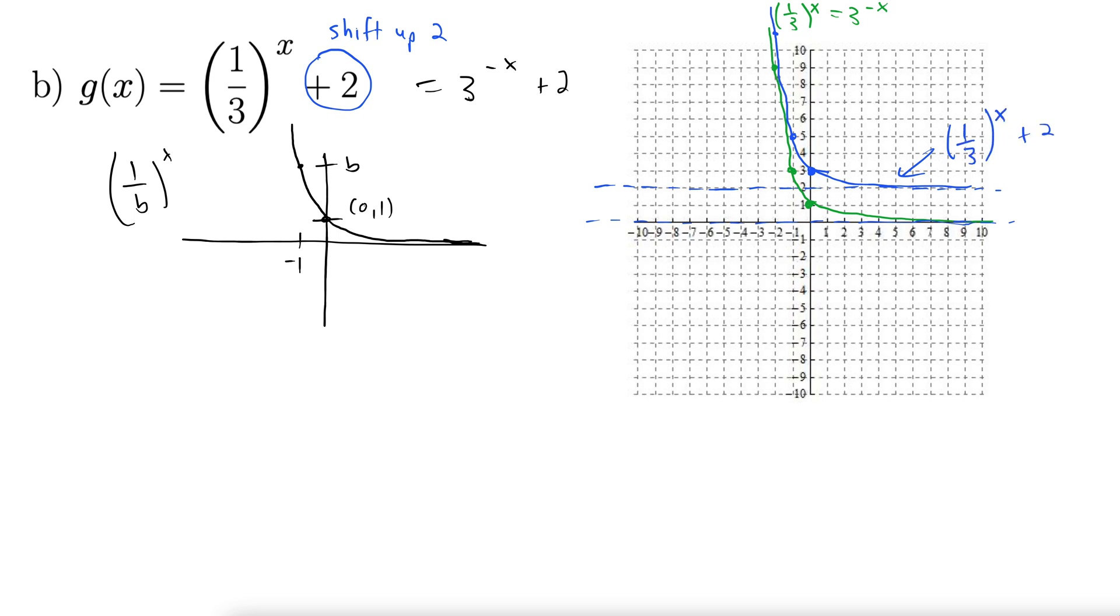And shift it up by 2. Hopefully yours are not as wavy as mine are. It's kind of hard to draw them on this writing tablet. But they should be nice and smooth, a nice curve without a bunch of weird blips and jumps and stuff like that. There we go. Straighten it out a little bit. So there it is. Shift it up by 2.